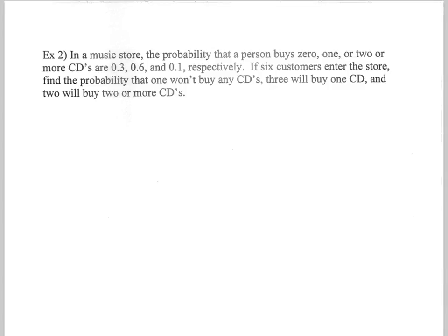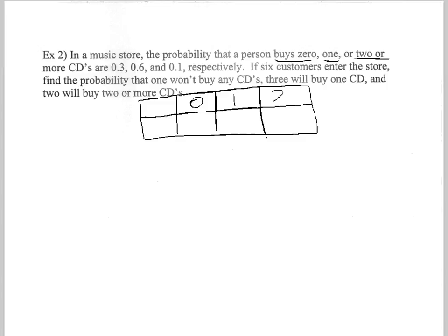Another example here. So we're looking at buying zero CDs, one CD, two or more CDs. So I'm actually going to draw a probability distribution, maybe it's a little easier to see if there's a distribution. They might buy zero CDs, one CD, two or more CDs. Well, the probability that they buy zero CDs is 0.3, probability they buy one CD is 0.6, probability that they buy two or more is 0.1.